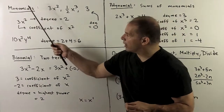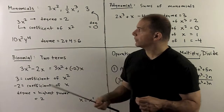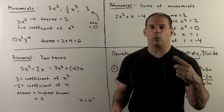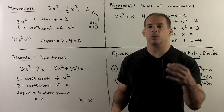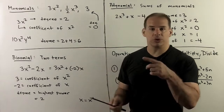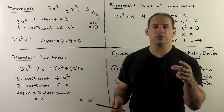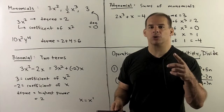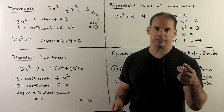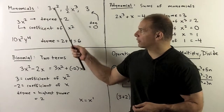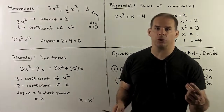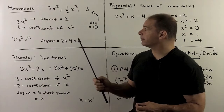First, we have a monomial. For a monomial, we'll have a number, then we'll have a variable or several variables, all raised to powers which are zero or positive. So things we can have are like 3x squared, a half x cubed, or we can have just the number 3.